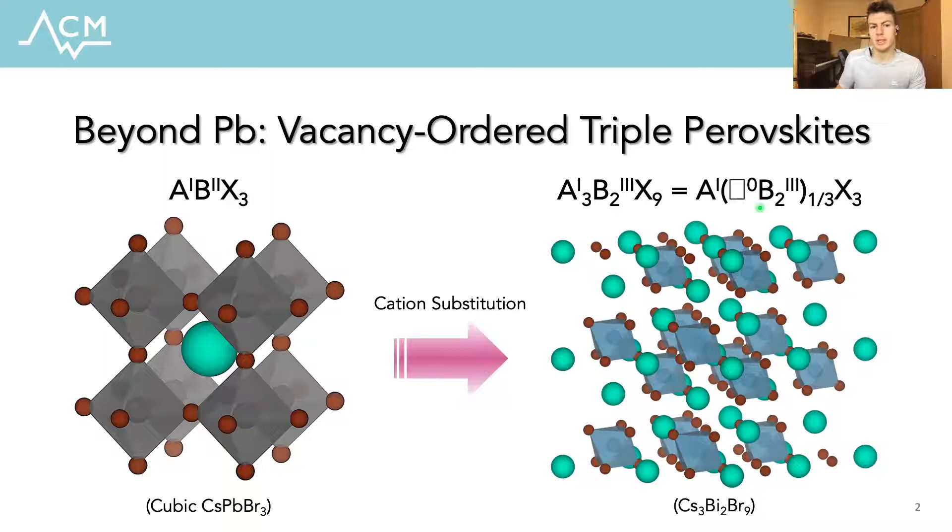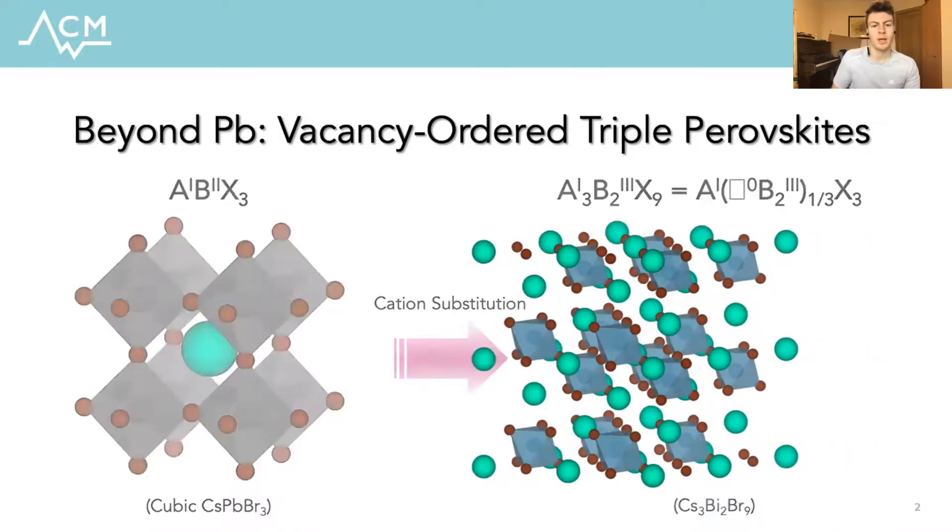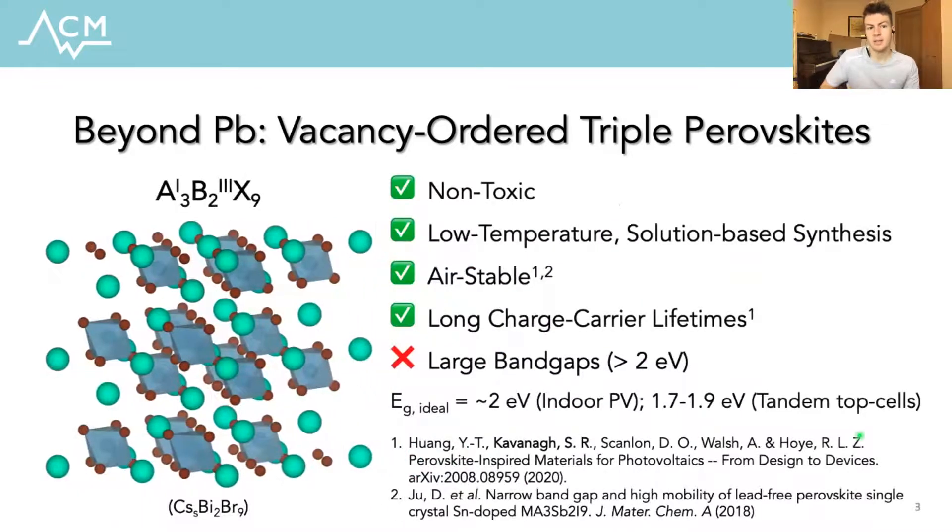The result is a quasi-2D structure with pairs of bismuth-bromine octahedral layers separated by a layer of vacant cation sites. By avoiding the presence of lead, these materials are thus non-toxic yet may still be synthesized using the low-temperature solution-based methods, which were of course one of the primary sources of hype behind the lead-halide perovskites. Additionally, these materials have been demonstrated to be stable in air and to exhibit long charge carrier lifetimes comparable to that of the lead-based perovskites.